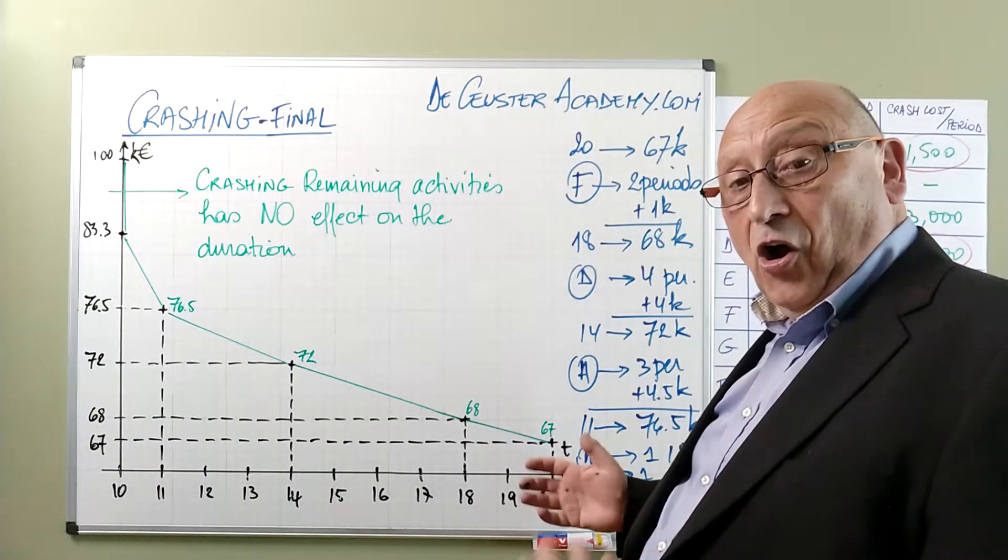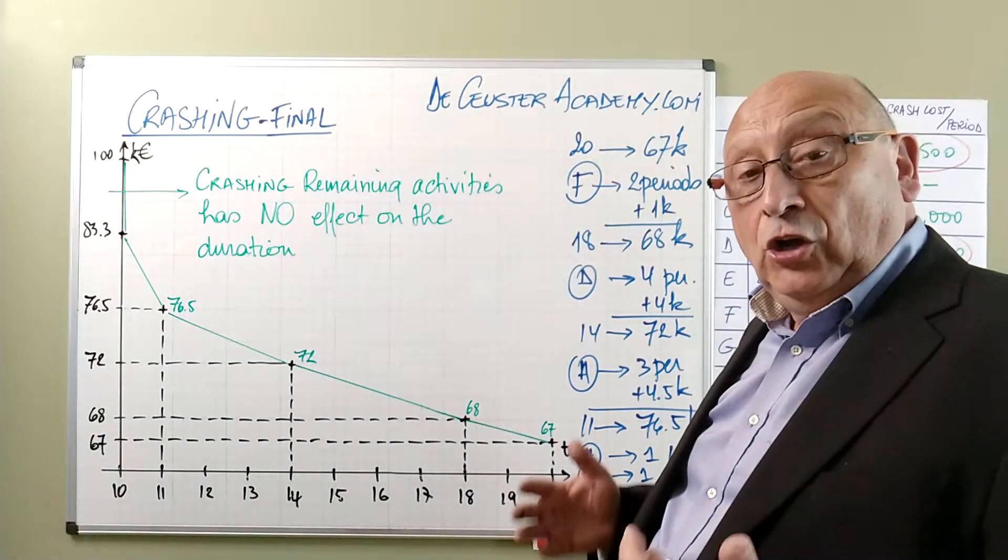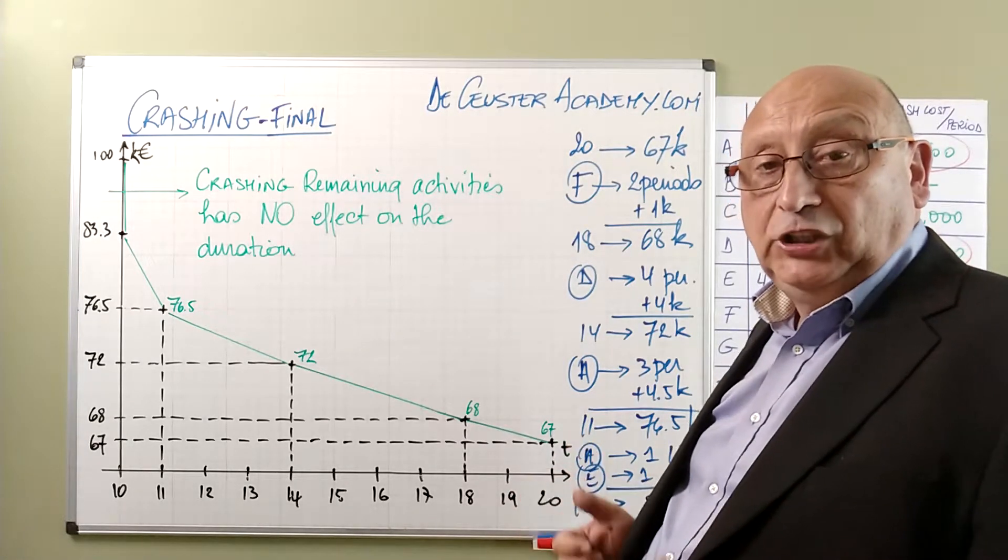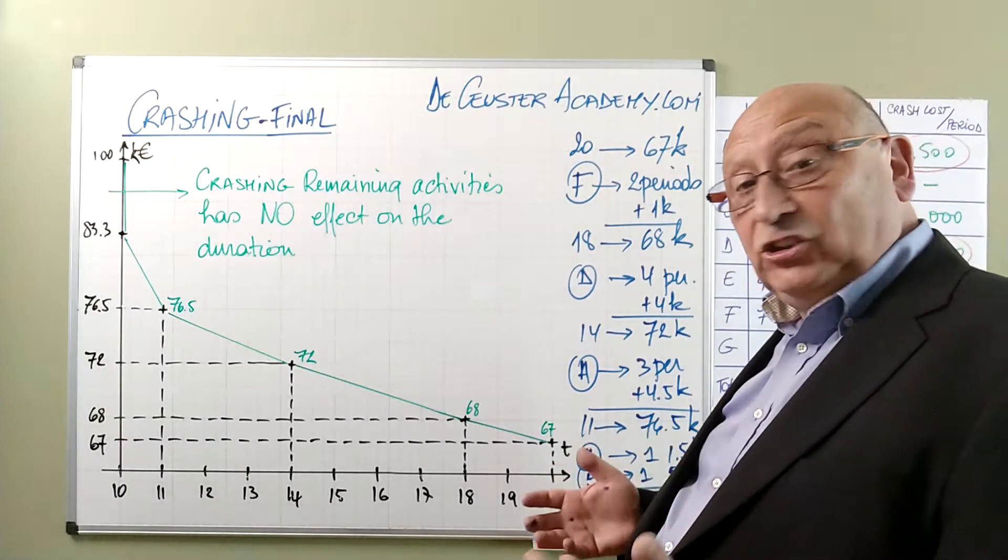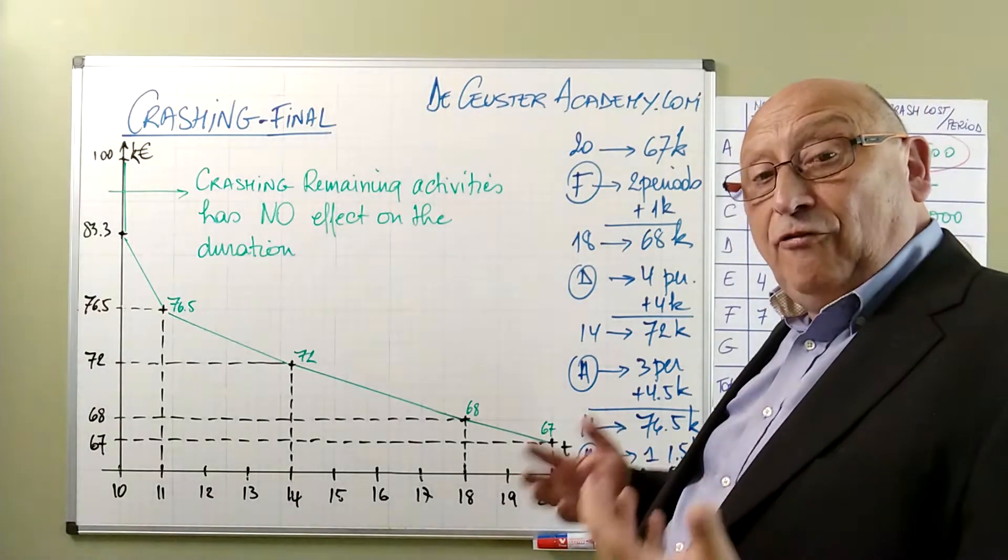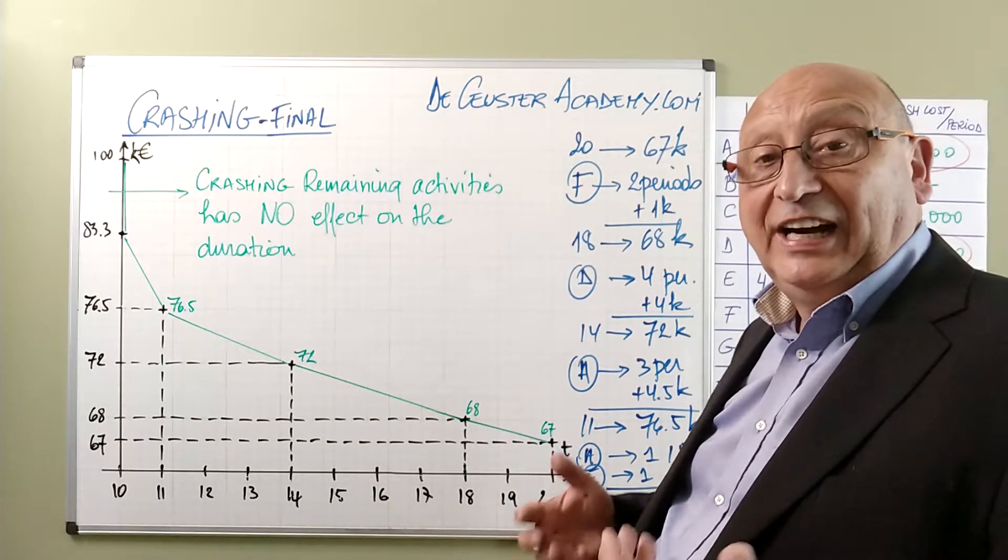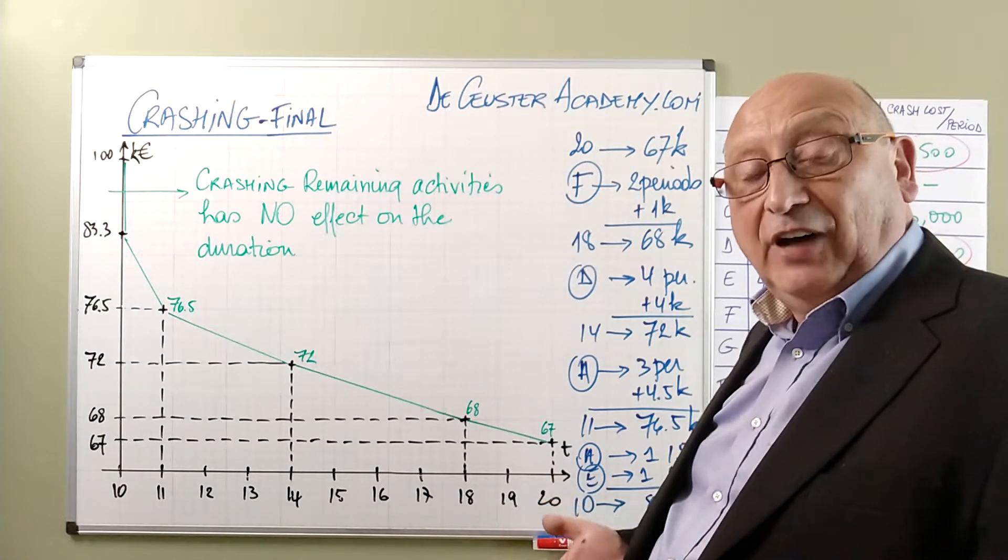The more we crash, the more expensive the project will be. But we also see that once we crash up to 10 periods, further crashing the remaining activities, the ones that we didn't crash yet, will not give any extra advantage. It will only create slack on the other parts which are not critical anymore.